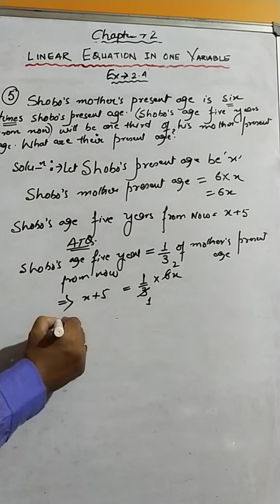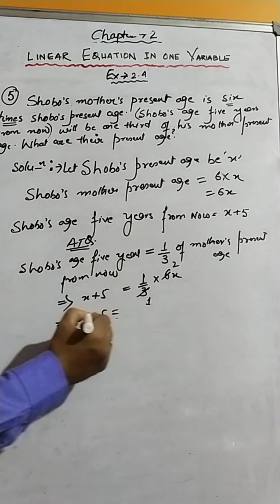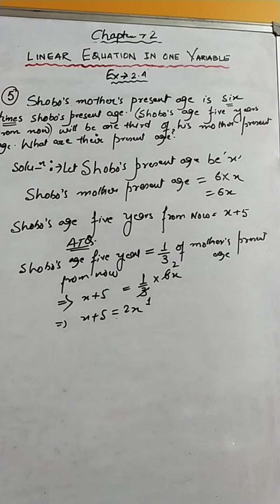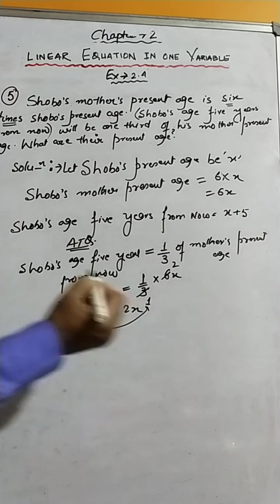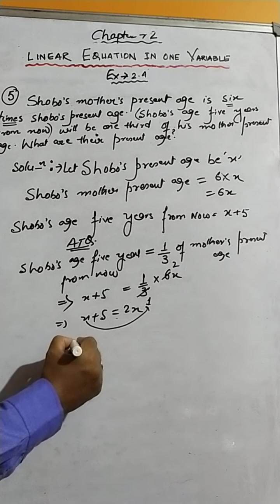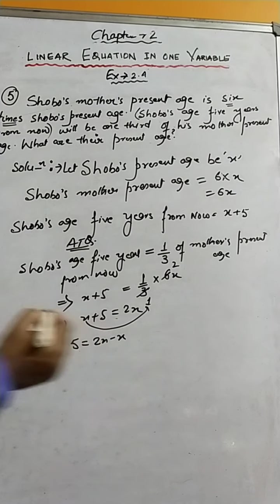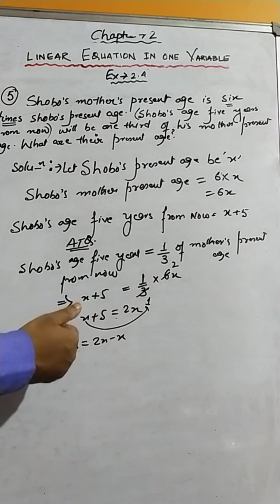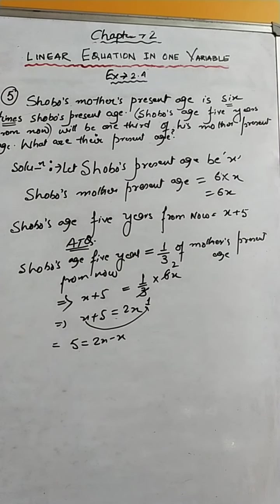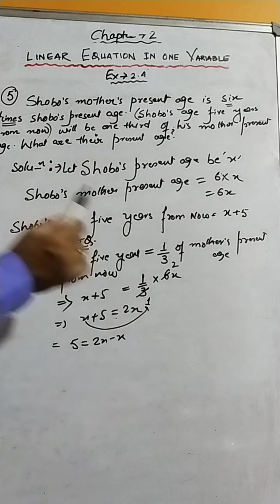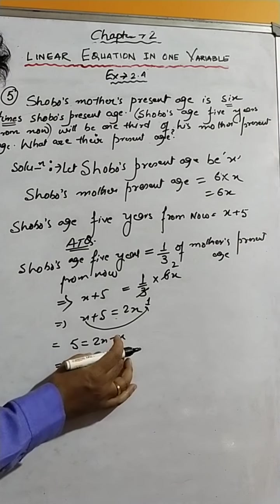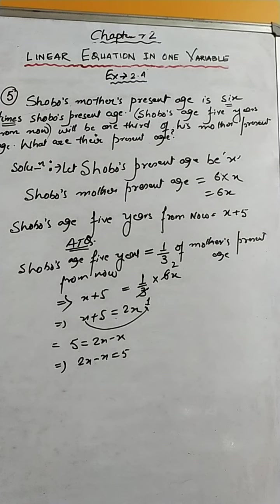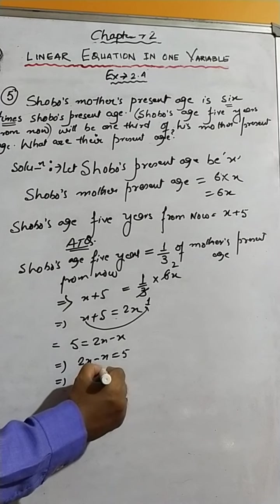This can be easily reduced: three twos are six, so X plus five equals two X. Now we take X to the right side, keeping variables on one side and constants on the other. So five equals two X minus X, which we can also write as two X minus X equals five, giving us X equals five.